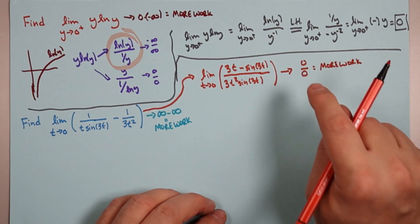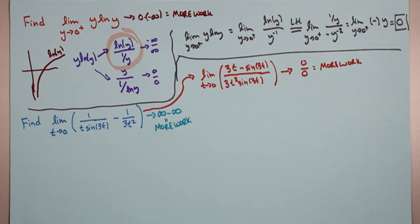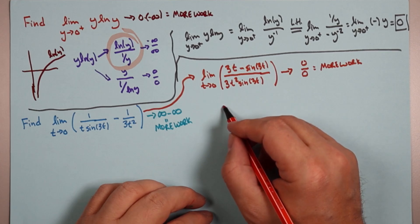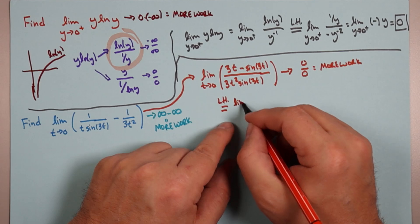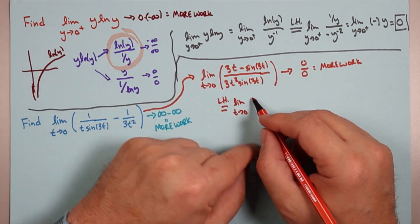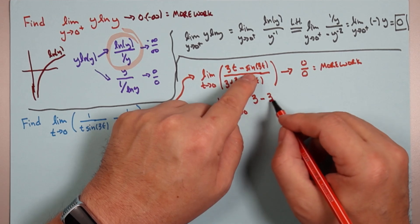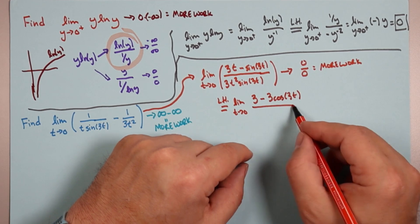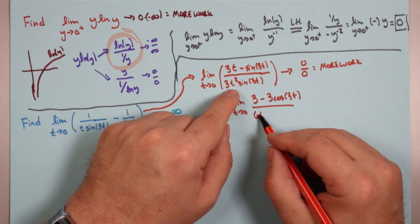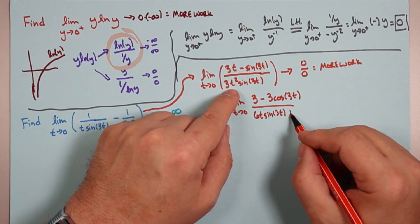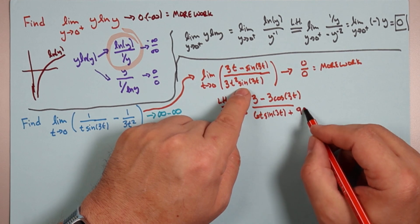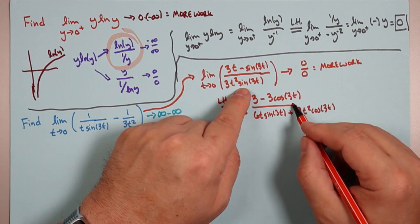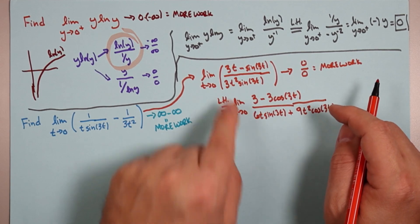Apply L'Hôpital: limit as t goes to zero. Upstairs, derivative of the numerator gives 3 minus 3 cosine(3t). Downstairs, product rule: derivative of the first is 6t times sine(3t), plus 3t² times derivative of sine(3t), which is 3 cosine(3t) — making 9t² cosine(3t). The 9 comes from 3 and the 3 from the chain rule. Plug in t=0: upstairs, 3 minus 3 times 1 is zero. Downstairs, 6(0)sin(0) is zero, and 9(0²)(1) is zero. Zero over zero — more work.